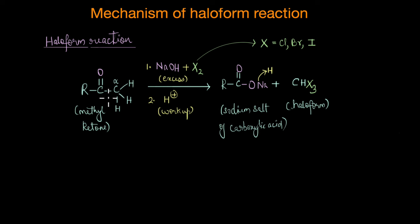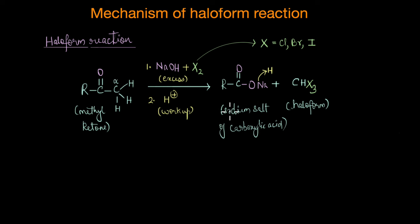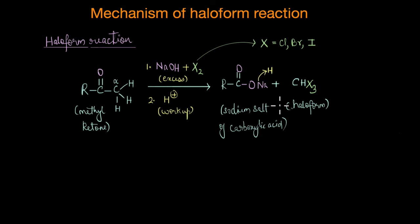The RCO group of the methyl ketone is retained in the product, but the CH3 group gets transformed to haloform. This is why this reaction becomes important in conversion reactions where we need a carboxylic acid that has one carbon atom less than the starting reactant. But we can get to that part later.